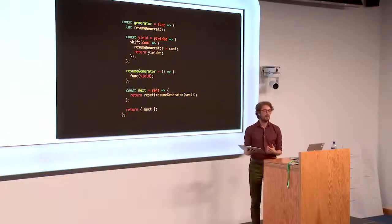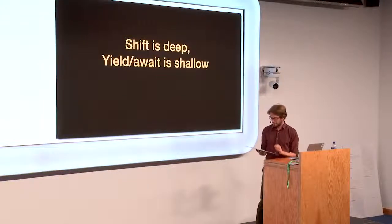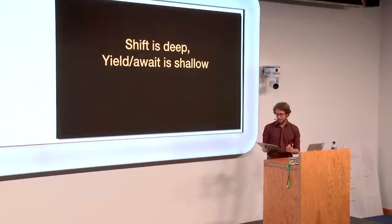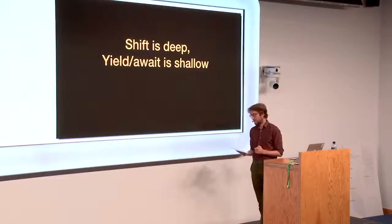Whatever shift returns is what reset returns. So whatever was passed into yield is what we ultimately get back returned from our call to next. When we call next again, our resume generator has been overwritten with that saved continuation. So we just resume the execution of the function at that point. So you can see that yield is just a very thin wrapper, placing some restrictions on how shift is used. There is a big difference in JavaScript, though.